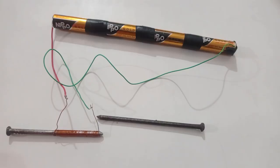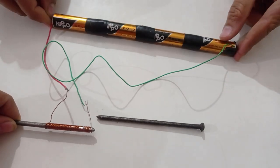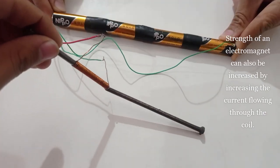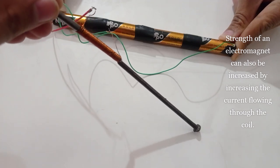Another method is to increase the current flowing through the coil. For that, I have taken a bigger battery and an electromagnet with less number of coils. And again, the strength of our electromagnet has increased.